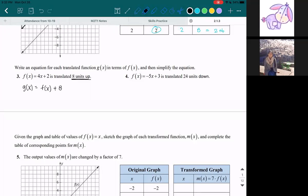So that's what we mean by writing each translated function g(x) in terms of f(x), so that's this black underlined part. That's the instruction we just followed. And then we're going to also simplify the equation.